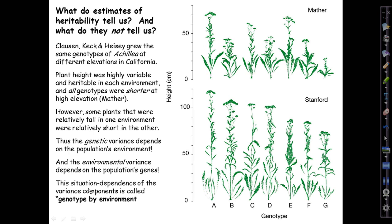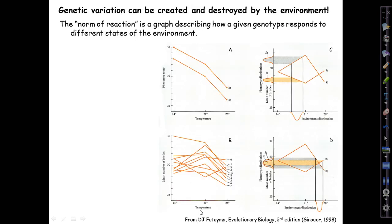This situation dependence of variance components is called genotype by environment or G by E interaction. We've met it before. We're just coming at it again to try to nail down its meaning and its significance.